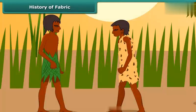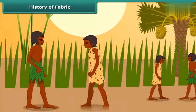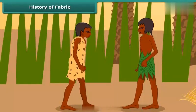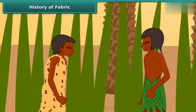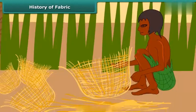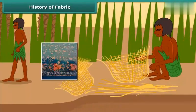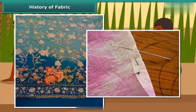Have you ever wondered what materials people used in ancient times for clothing? They used the barks and leaves of trees, animal skins and fur to cover themselves. Slowly, with growing civilization, they learned to weave twigs and grass into mats and baskets. Stitched fabrics came much later with the invention of needles.